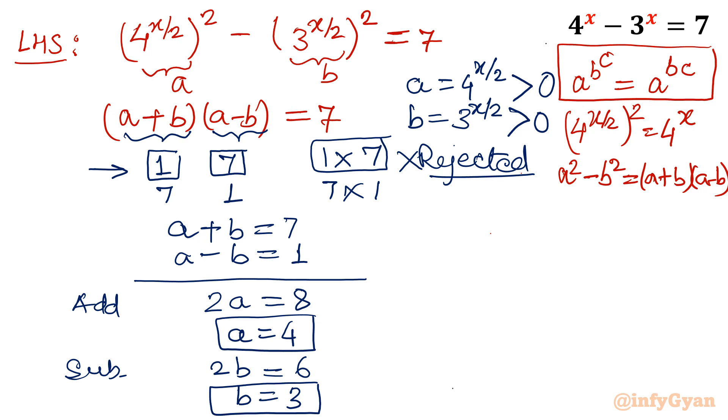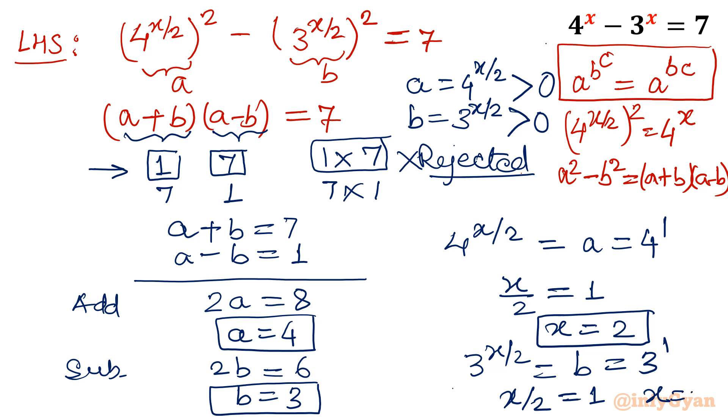So what is A? 4 raise to the power x over 2 is equal to A equal to 4. 4 means 4 raise to the power 1. So x over 2, you will compare its exponent. Because base is same, 1. So x will be 2. Similarly for B, I will write 3 power x over 2 is equal to B equal to 3. So x over 2 will be equal to 1, 3 raise to the power 1. So x will be equal to 2.